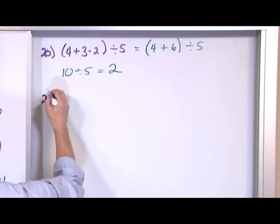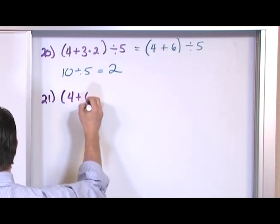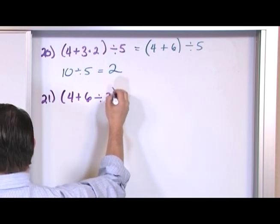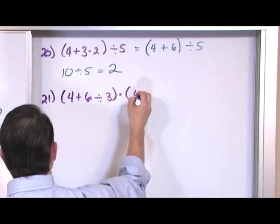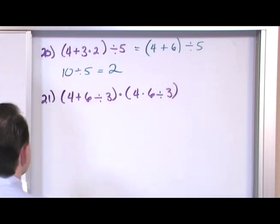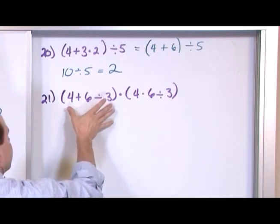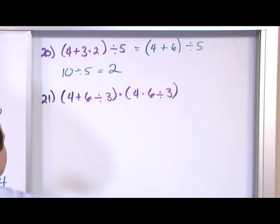Okay, 21. Let's say we had 4 plus 6 divided by 3 multiplied by 4 times 6 divided by 3. Okay, so we have two things multiplied together, and both of them are basically inside a parentheses, so we have to evaluate inside the parentheses first.